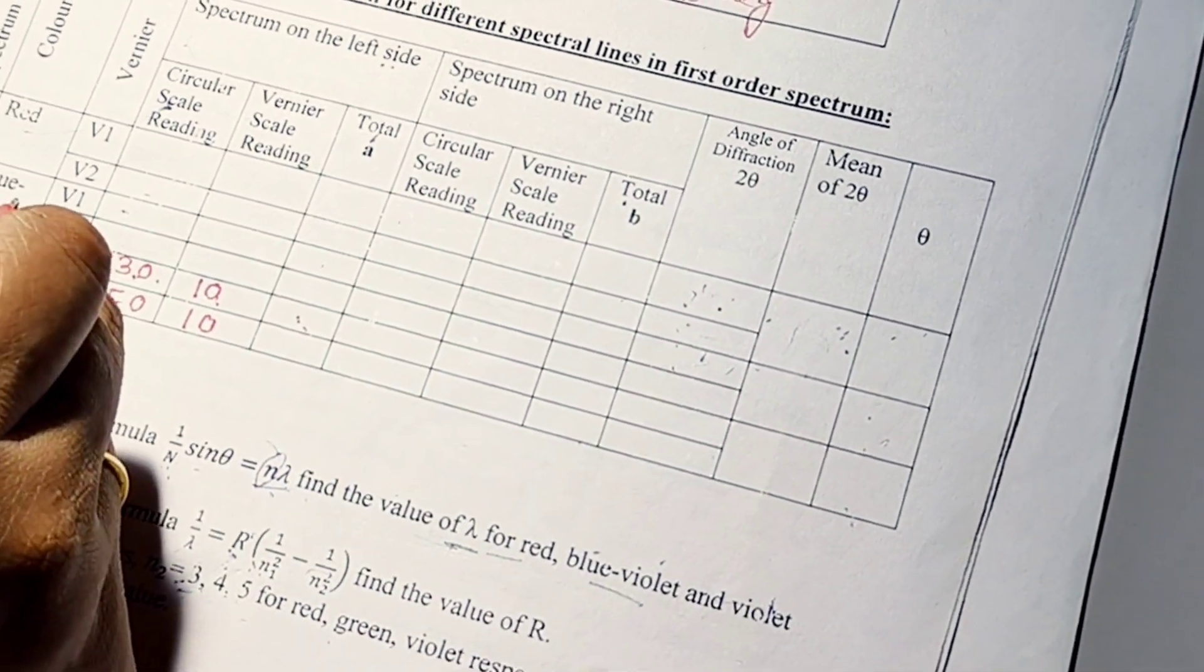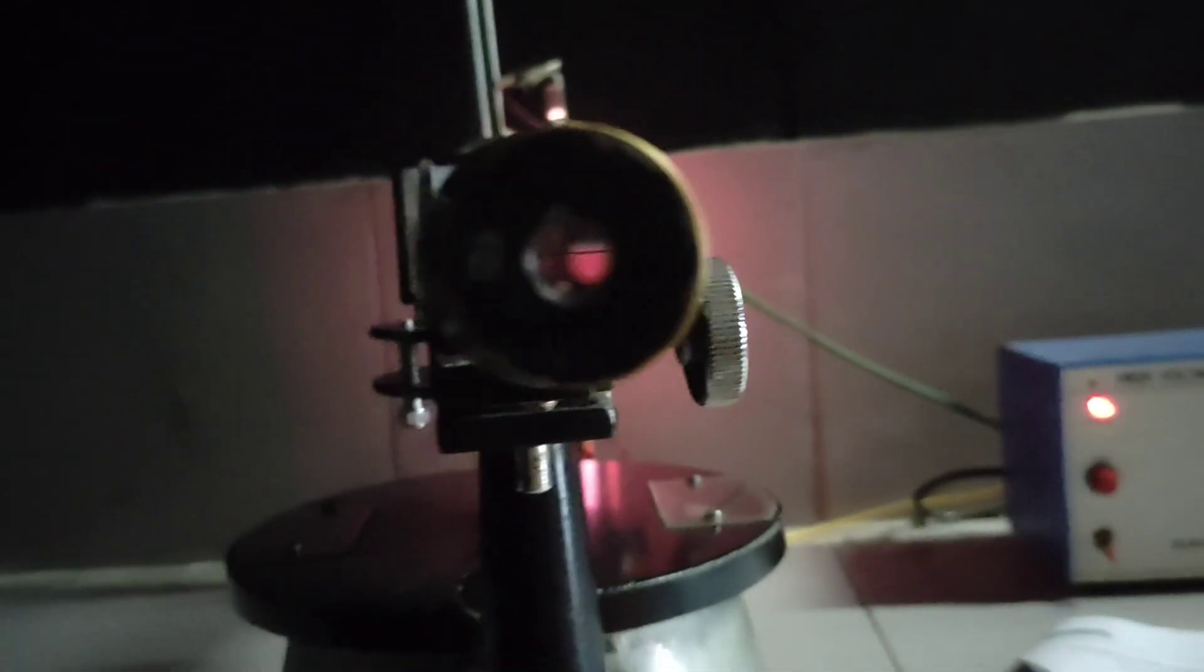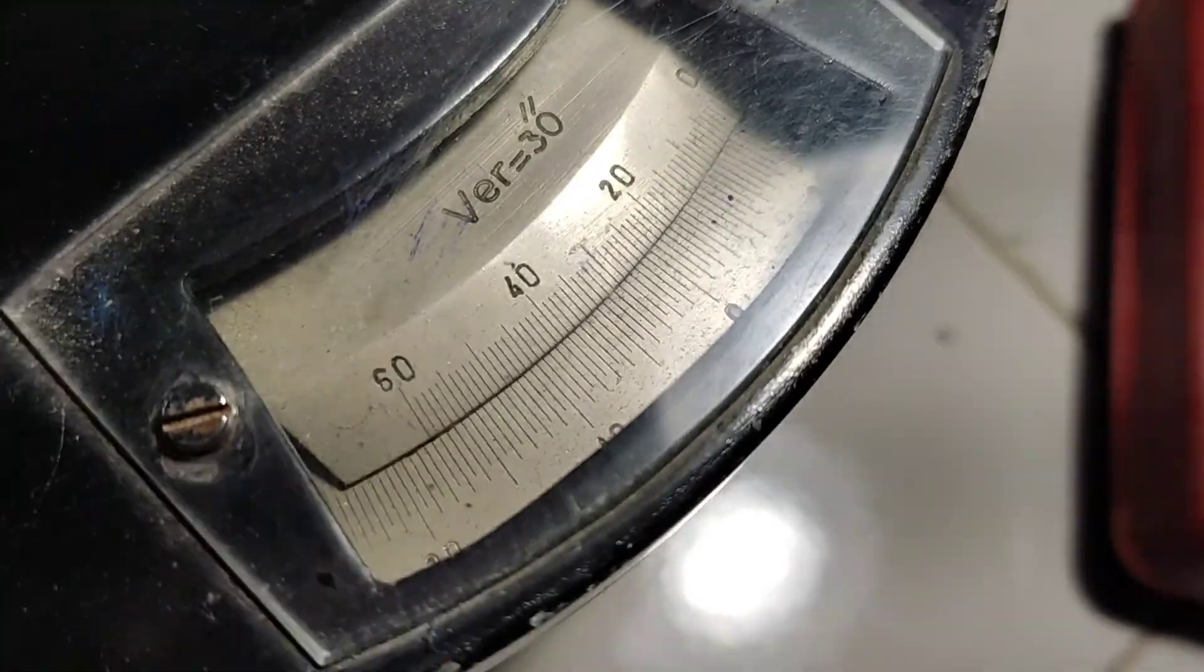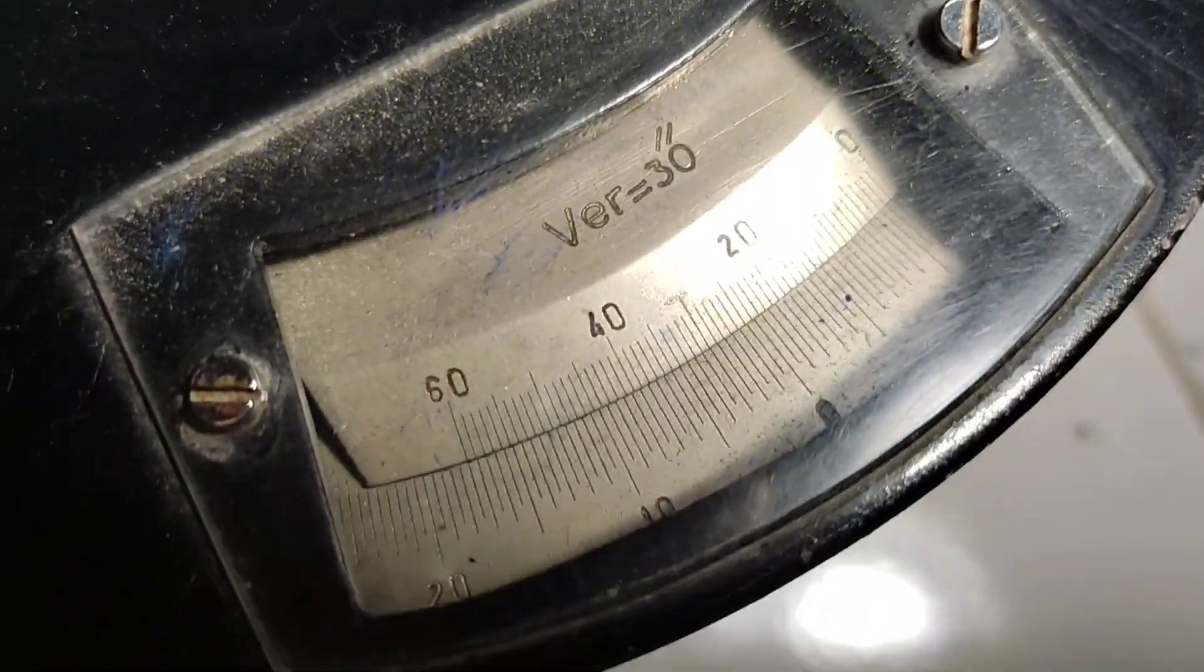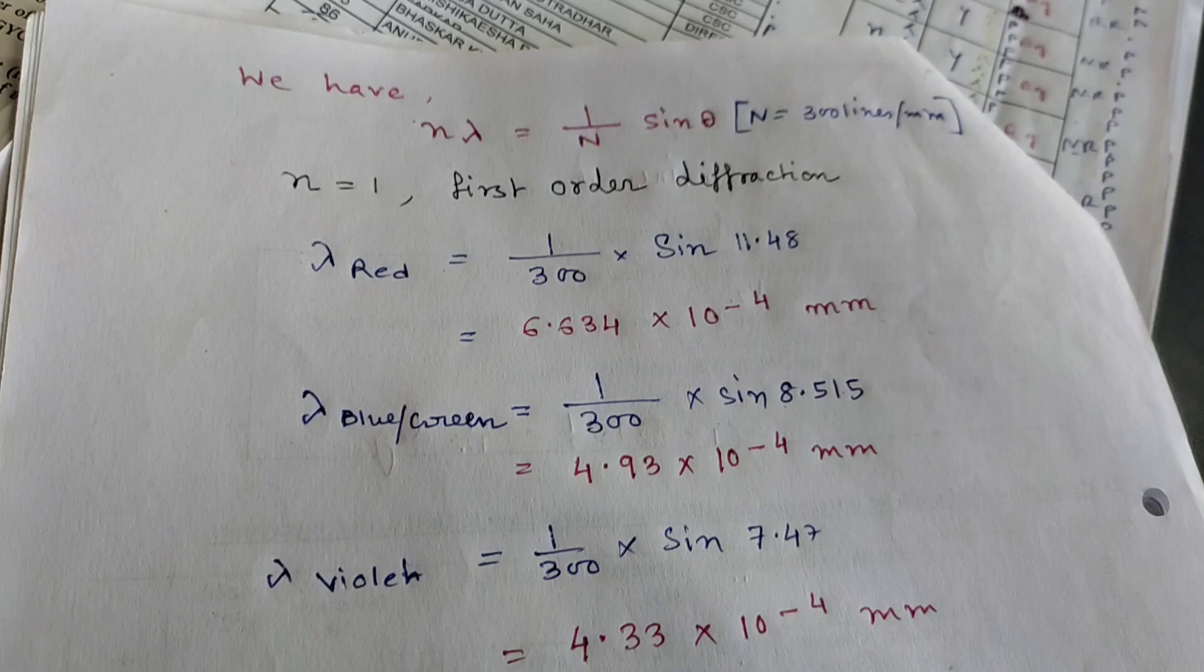I am going to take blue green reading and red reading. So, just like violet color, I have placed red color. I will take reading for red color from the both side of Vernier scale. So, just check the scale and take reading. So, one by one I have taken all the color reading from both side, left spectrum and right spectrum.